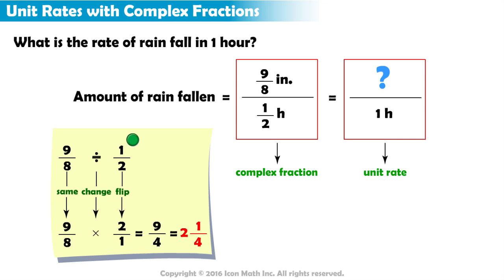The unit rate is 2 and 1-fourth inches over one hour. Therefore, we can predict there will be 2 and 1-fourth inches of rain for every hour.